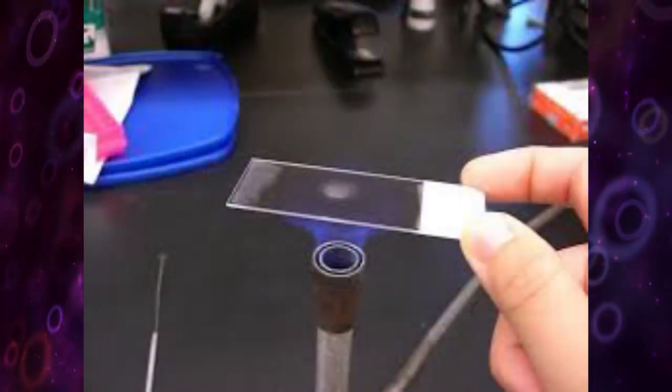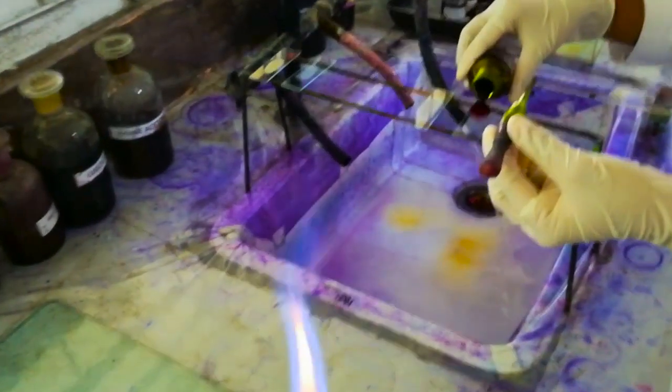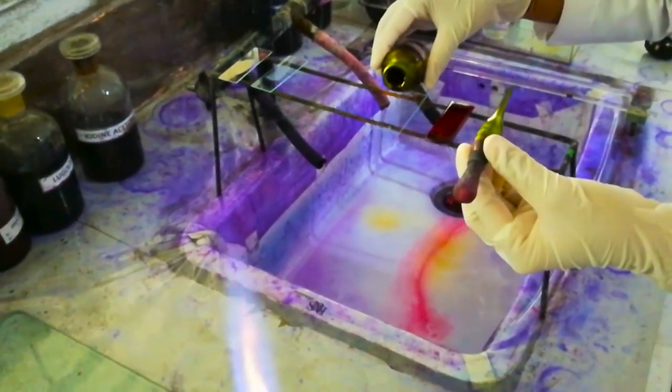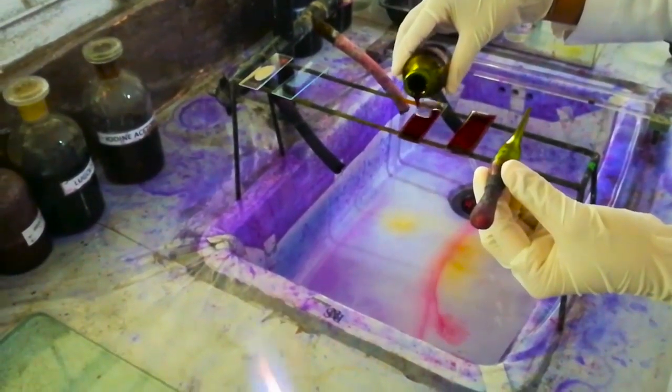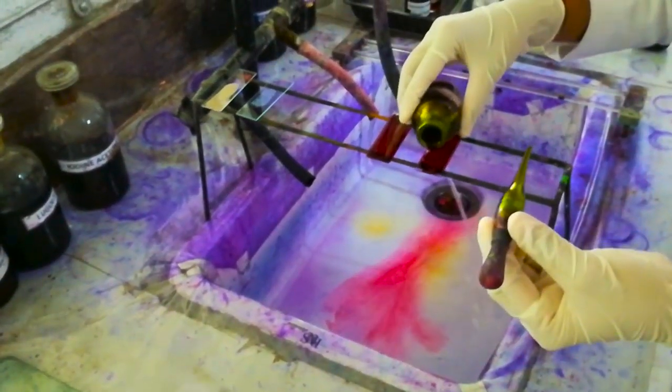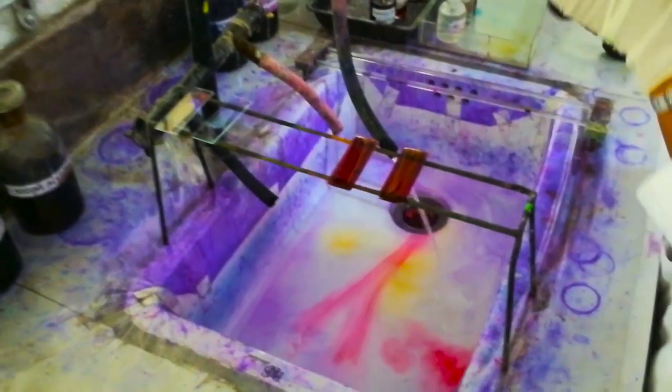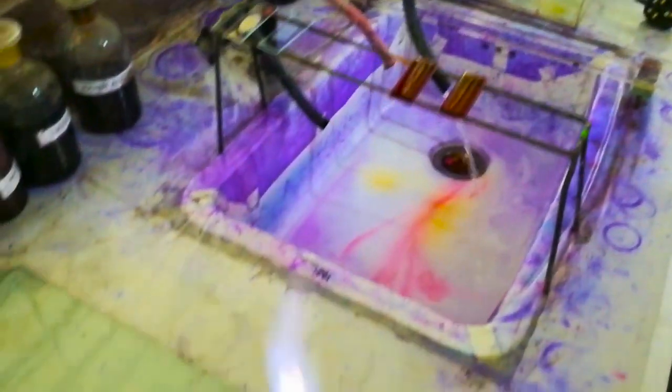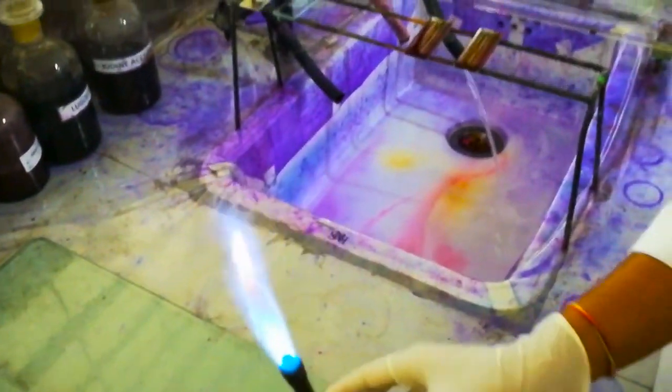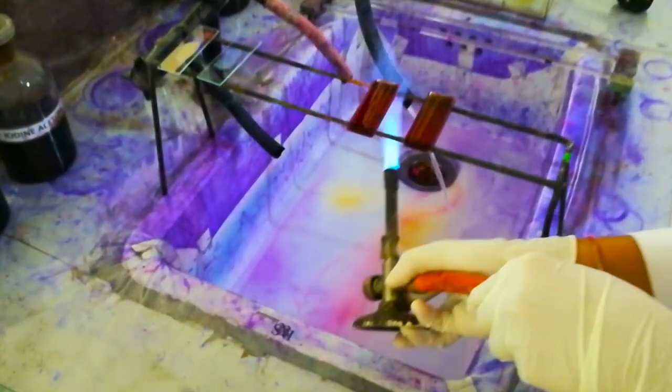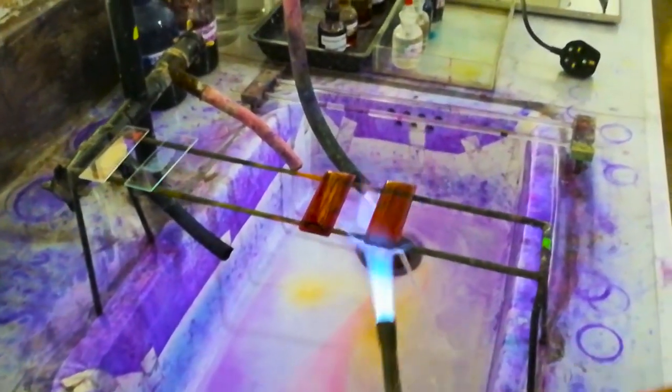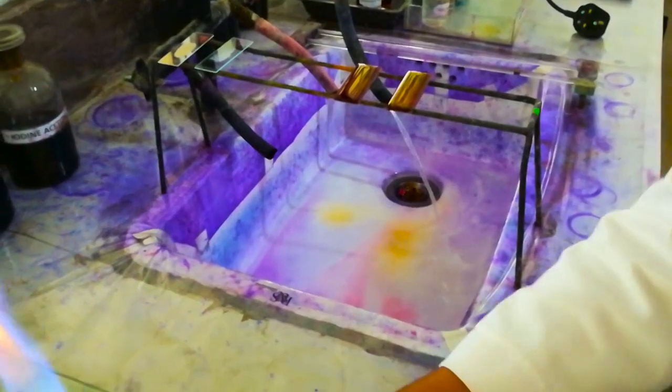Heat fix dried smear and cover the smear with 1% carbolfuchsin stain. Heat the smear until vapor just begins to rise, but should not overheat slides. You can add additional stain if necessary.